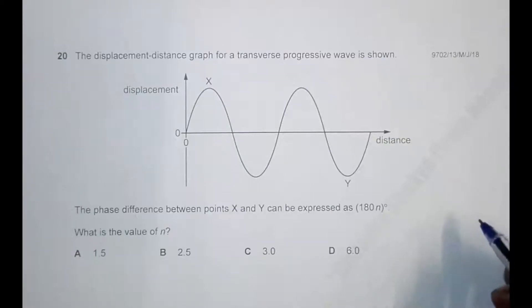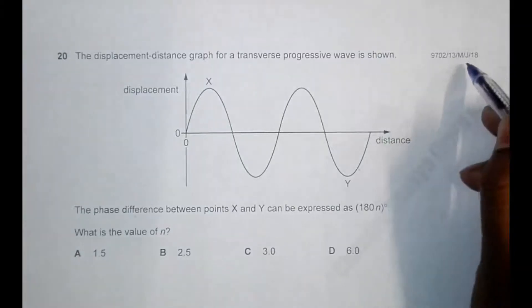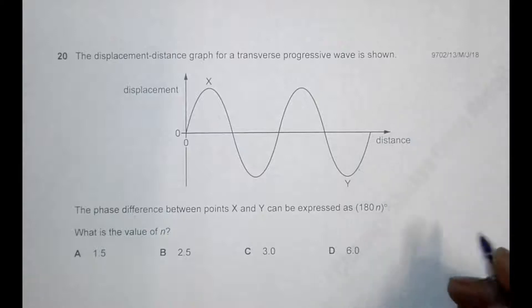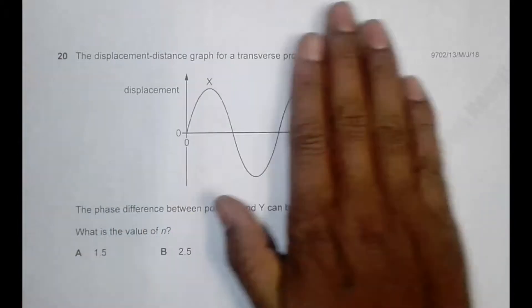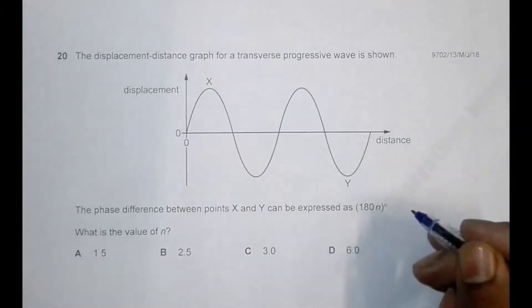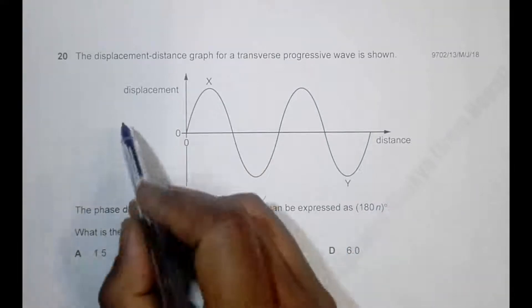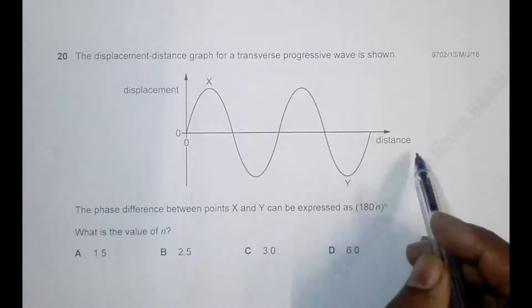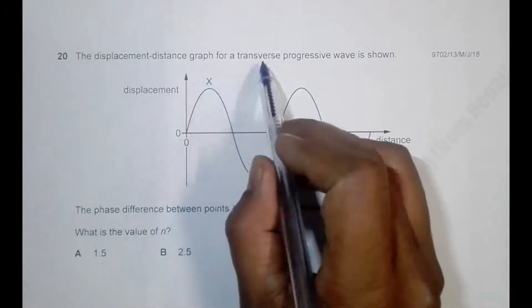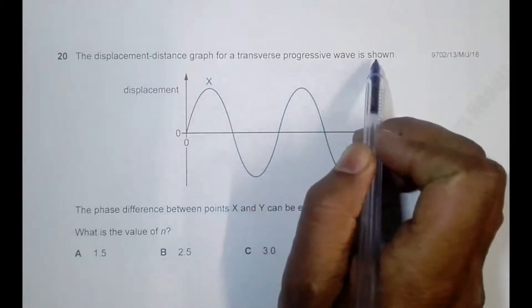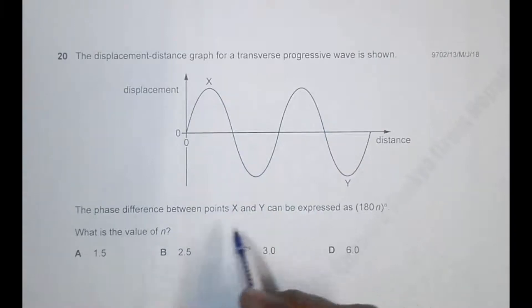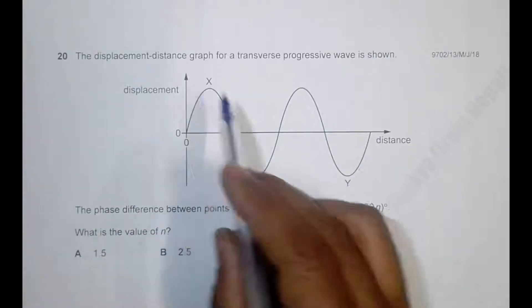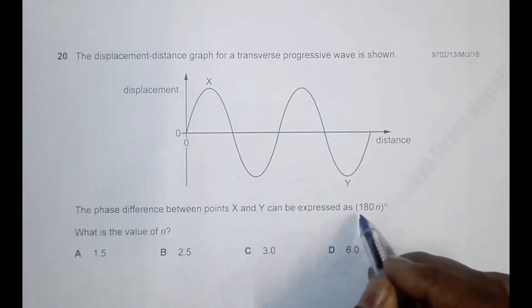Hello folks, this is a question from the 2018 paper one, question number 20. This time the question is concerned with waves. It says that the displacement-distance graph for a transverse progressive wave is shown. The phase difference between points X and Y can be expressed as